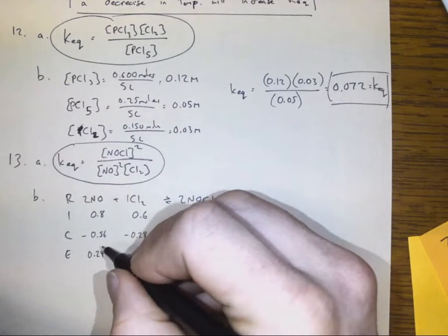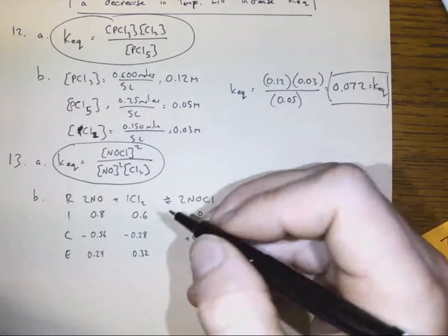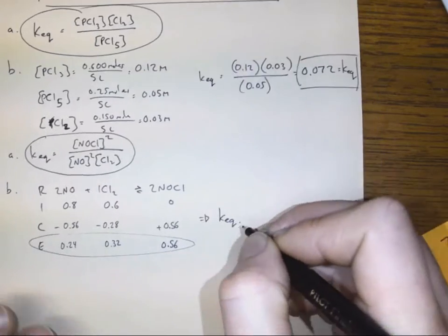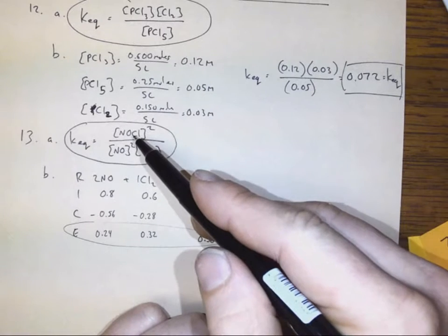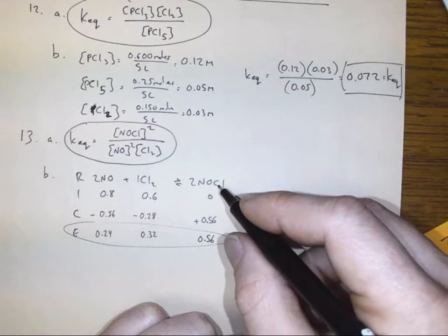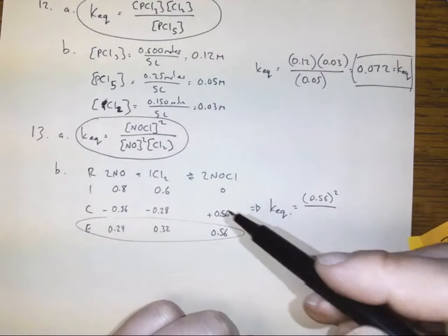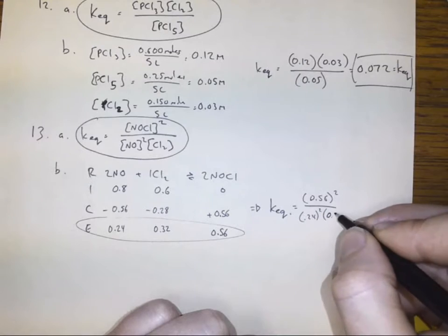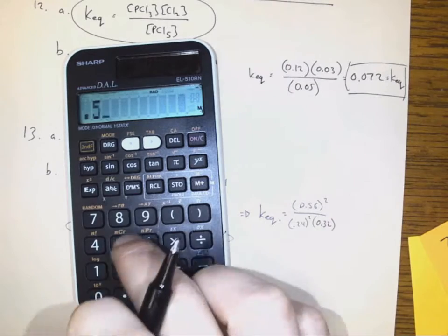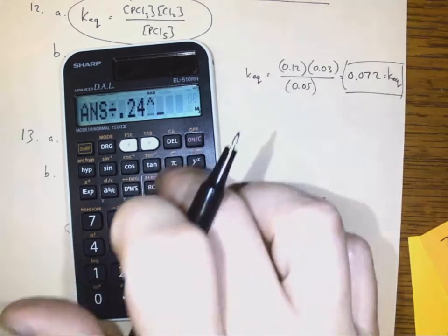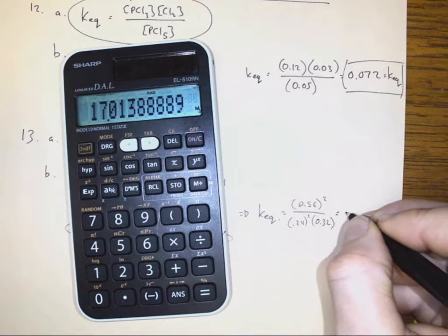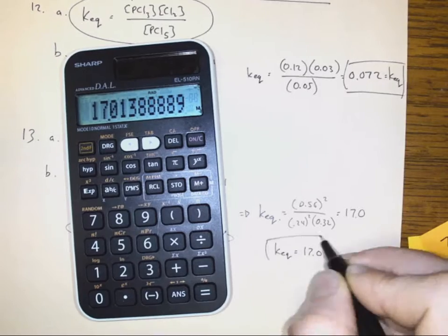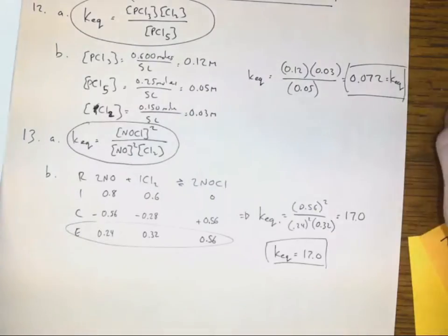Now we have equilibrium concentrations of each substance, so we can find KEQ. The equilibrium constant is the concentration of NOCl — 0.56 — squared, over the concentration of NO — 0.24 — squared, times the concentration of Cl₂ — 0.32. That equals 0.56² divided by 0.24² divided by 0.32, giving us an equilibrium constant of 17.0. So the equilibrium constant is 17.0 for this reaction, meaning it favors the products over the reactants by a factor of 17.